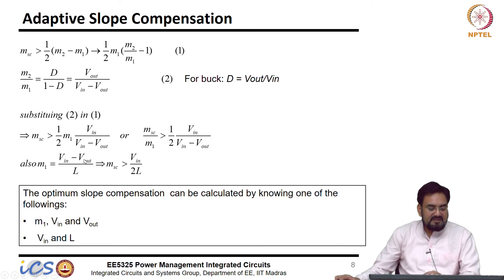And you can also write Vin minus Vout over L equal to M1 correct, that we know. So, your slope compensating ramp is Vin over 2L. So, the compensation slope is nothing but greater than Vin over 2L that is required.